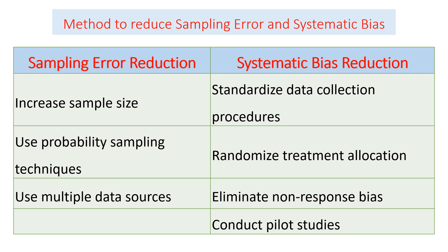Techniques to reduce systematic bias include: using a proper or standardized data collection procedure to avoid skewing towards some data; applying the randomization principle, as probability sampling may also reduce systematic bias; eliminating non-response bias by removing respondents who are unwilling or unable to respond; and conducting a pilot study to identify and fix systematic bias initially before collecting all samples.